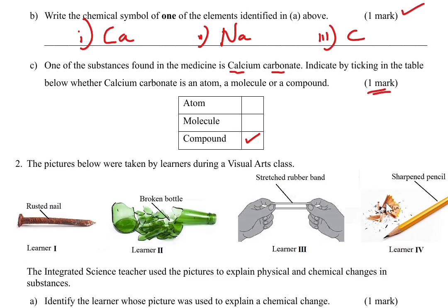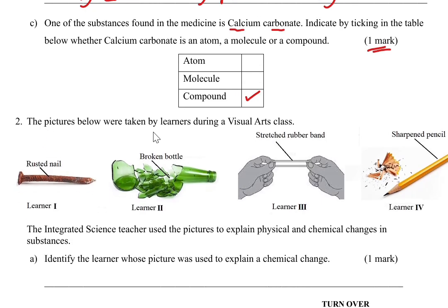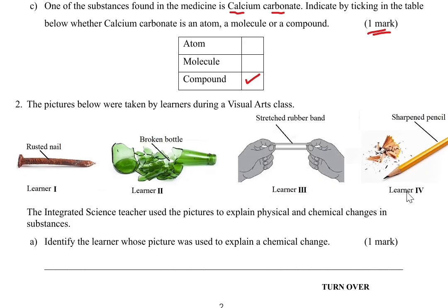Question 2: the pictures were taken by learners during a visual arts class. We have learner 1 with a rusted nail, learner 2 with a broken bottle, learner 3 with a stretched rubber band, and learner 4 with a sharpened pencil. The integrated science teacher used these pictures to explain physical and chemical changes. Part A: identify the learner whose picture was used to explain a chemical change. The correct answer is learner 1 — the rusted nail. You score one mark.